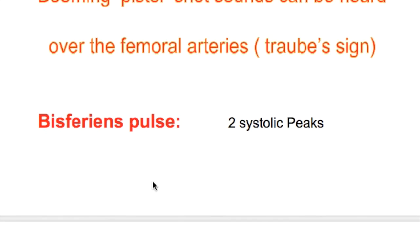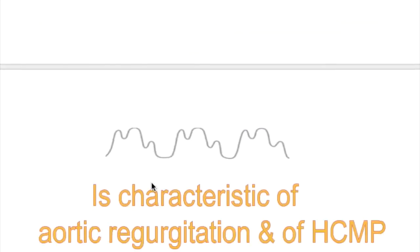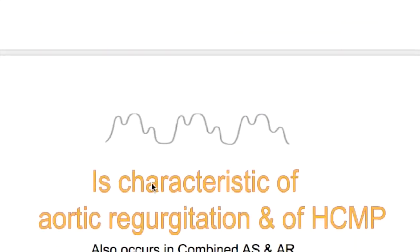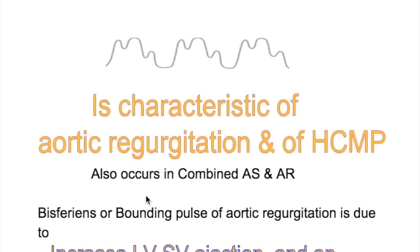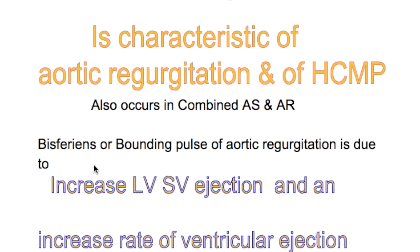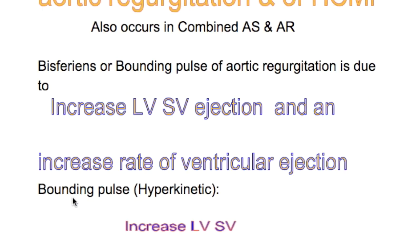Bisferious pulse has two systolic peaks and is characteristic of aortic regurgitation and hypertrophic cardiomyopathy, but also occurs in combined aortic stenosis and aortic regurgitation. The bisferious rebounding pulse of aortic regurgitation is due to increased left ventricular stroke volume ejection and an increased rate of ventricular ejection.